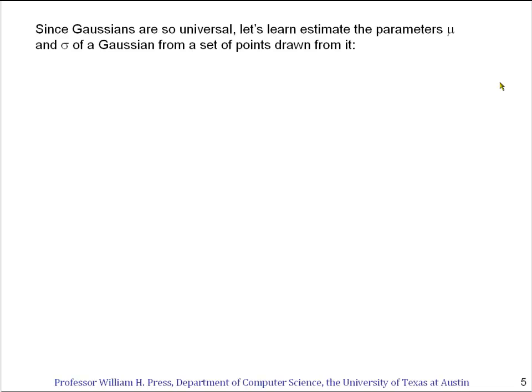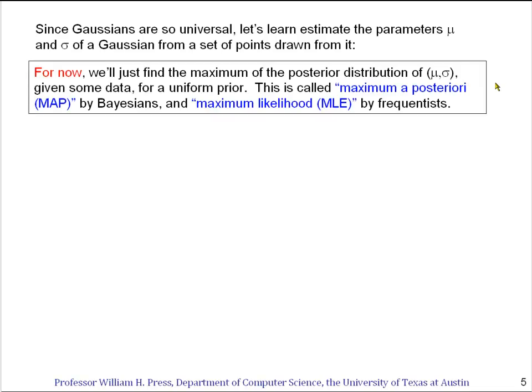So that's the central limit theorem, the sense in which Gaussian or normal distributions are universal. Let's learn to estimate the parameters, the mean and the standard deviation, of a normal distribution if we're given a set of points drawn from it. For now, I'm going to just find what's called the maximum a priori, or MAP estimate, of μ and σ by Bayesians. Frequentists call this the maximum likelihood estimate, or MLE estimate.